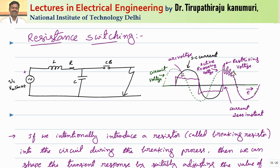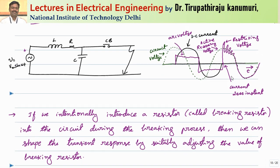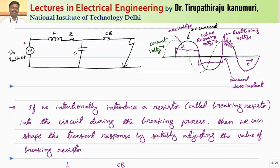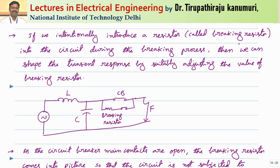This effect will be much more severe in cases of current chopping or capacitor current switching, which we will discuss in the next lecture. So, how can we overcome and suppress these high frequency oscillations so that the voltage across the contacts will only equal the active recovery voltage with no oscillations? To achieve this, we intentionally introduce a resistor across the circuit breaker contacts whenever the contacts are being opened.